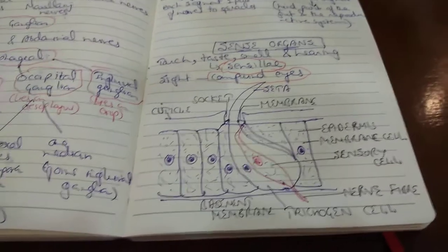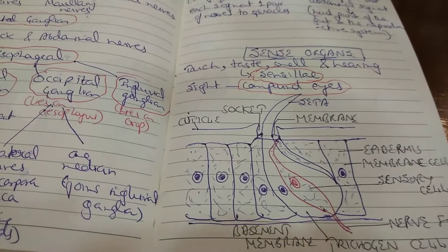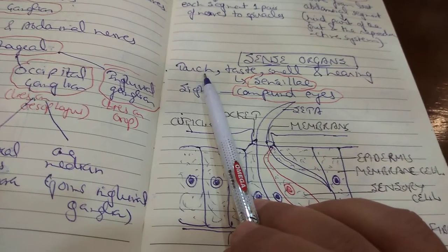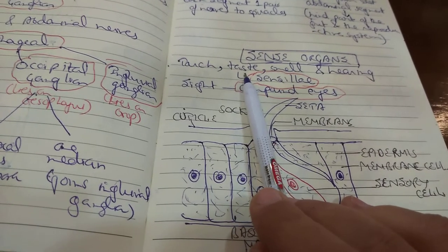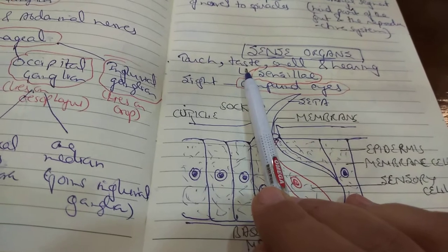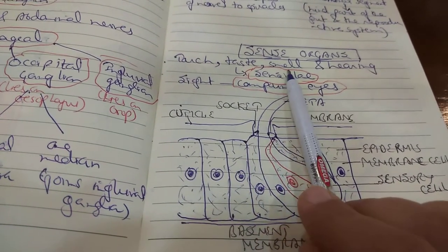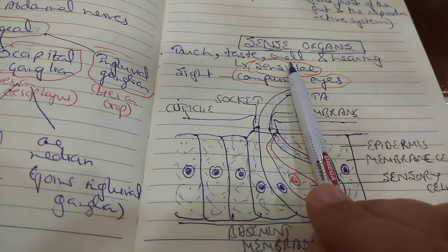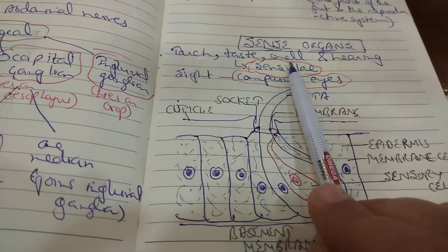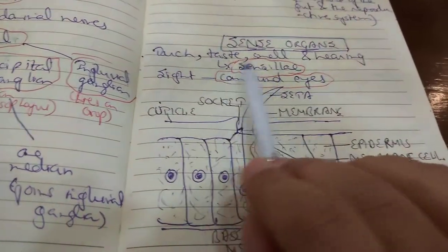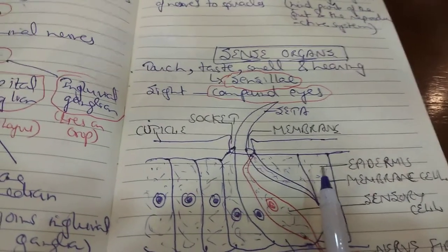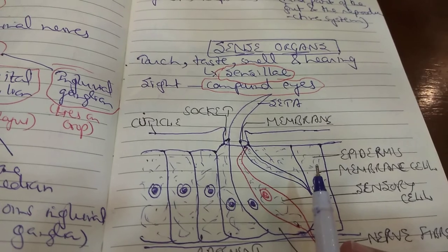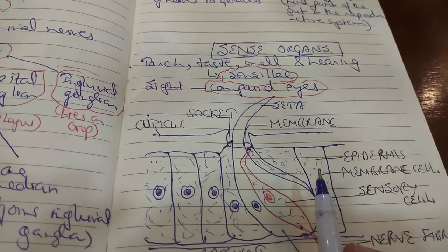Tactile sensilla, for touch, are found all over the body, especially on the antennae, tibia of legs and cerci. Gustatory sensilla, for taste, are present on the tips of the maxilla, labial palps and on the epipharynx. Olfactory sensilla, for smell, lie on the antenna and the palps — those on the antennae perceive smell from a distance, while those on the palps perceive it from close quarters. The chemoreceptors — gustatory and olfactory — have very thin cuticle kept moist by glandular secretion. The auditory sensilla for hearing are located on the anal cerci. The antennae may also bear sensilla for humidity and temperature.